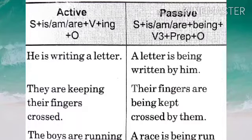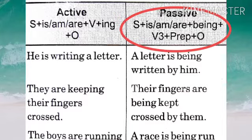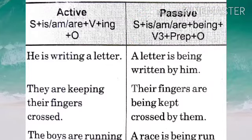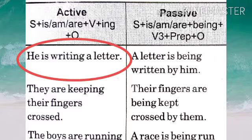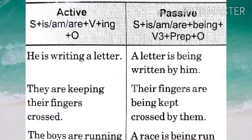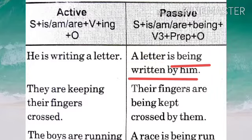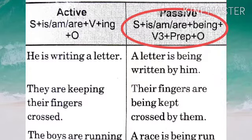The rule for present continuous tense in passive voice is: subject + is/am/are + being + third form of verb + preposition + object. Let's take an example: 'He is writing a letter.' When you change it to passive, the object 'a letter' becomes the subject. 'Letter' takes the singular verb 'is', so: 'A letter is being written by him.' We use is/am/are + being + third form of verb + preposition + object.